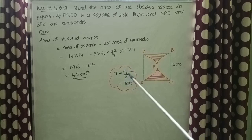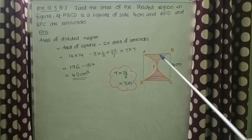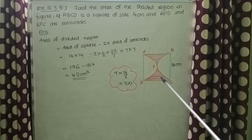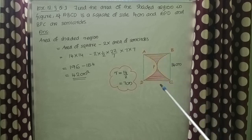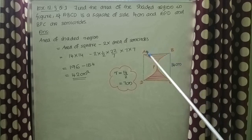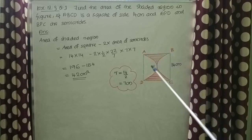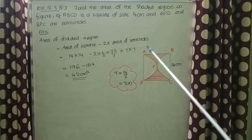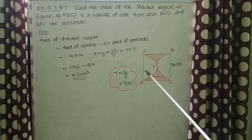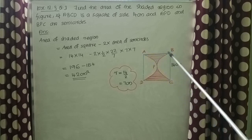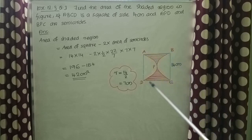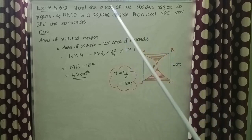So the radius is 14 by 2, which is 7 cm. Now we need to find out the area of the shaded region. To find the area of this shaded region, we need to subtract the area of the two semicircles from the area of the square.